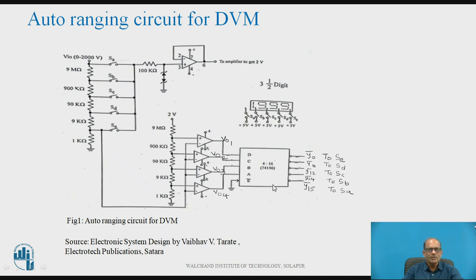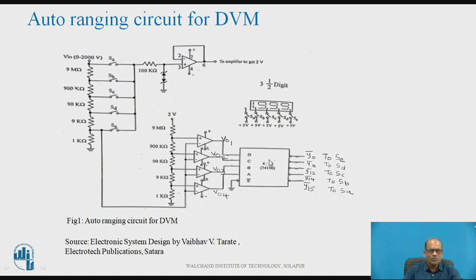The comparator outputs go to a 4-to-16 decoder. The 4-to-16 decoder has 16 outputs, out of which 5 are used here, and these outputs are active low. The outputs Y0 bar, Y8 bar, Y12, Y14, and Y15 are connected. These decoder outputs are connected to control switches SE, SD, SC, SB, and SA respectively, meaning these outputs control the solid-state switches SA, SB, SC, SD, and SE.